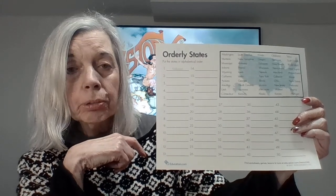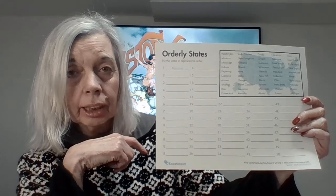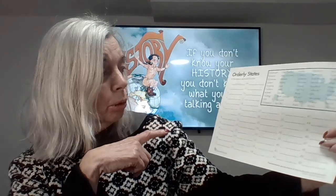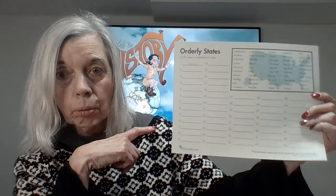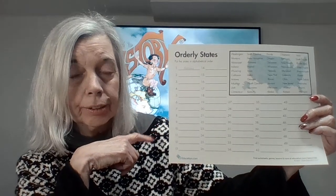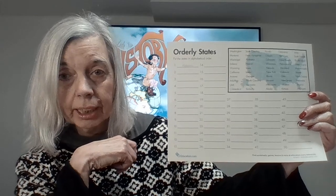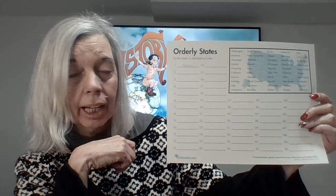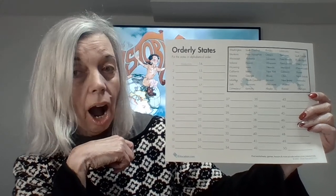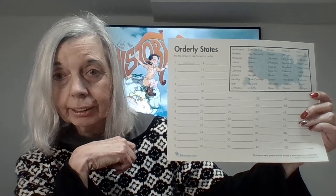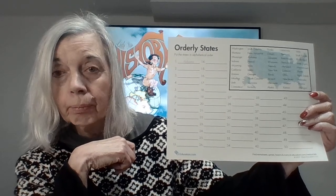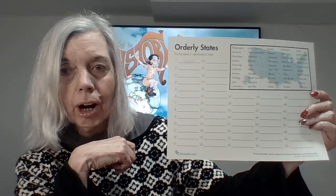Then you move on to the other A words. The next group would be the A-R words — you have two states that begin with A-R: Arizona and Arkansas. Since I comes before K, Arizona would come before Arkansas.